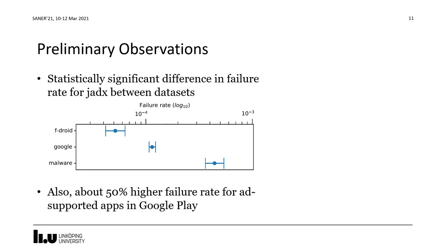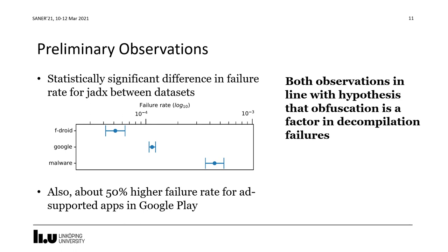We also looked at the difference in failure rates for ad-supported versus non-ad-supported apps in Google Play, and found that the ad-supported ones had about 50% higher failure rates. Both observations point toward obfuscation being a factor in decompilation failures — malware is frequently obfuscated while there is very little reason for open source developers to use code obfuscation, and commercial app developers have a greater incentive to obfuscate, which could explain the greater degree of failures for ad-supported apps.